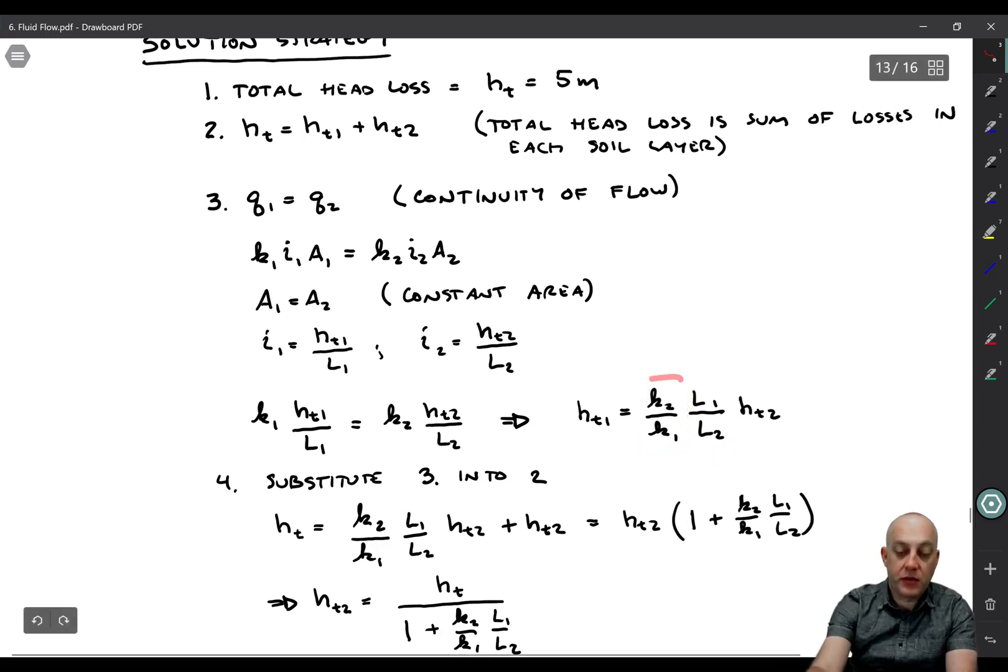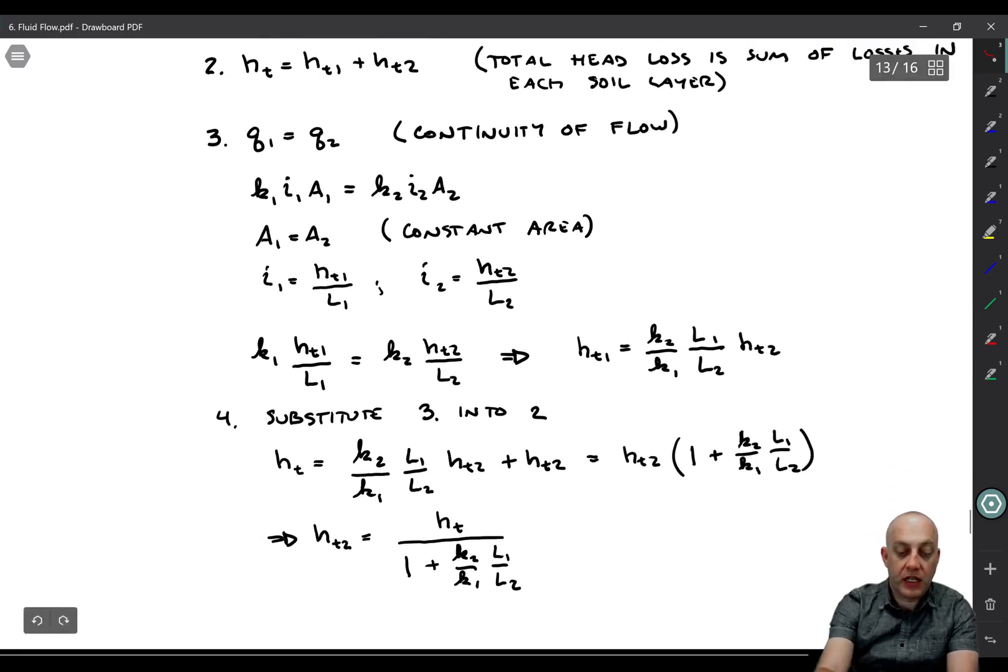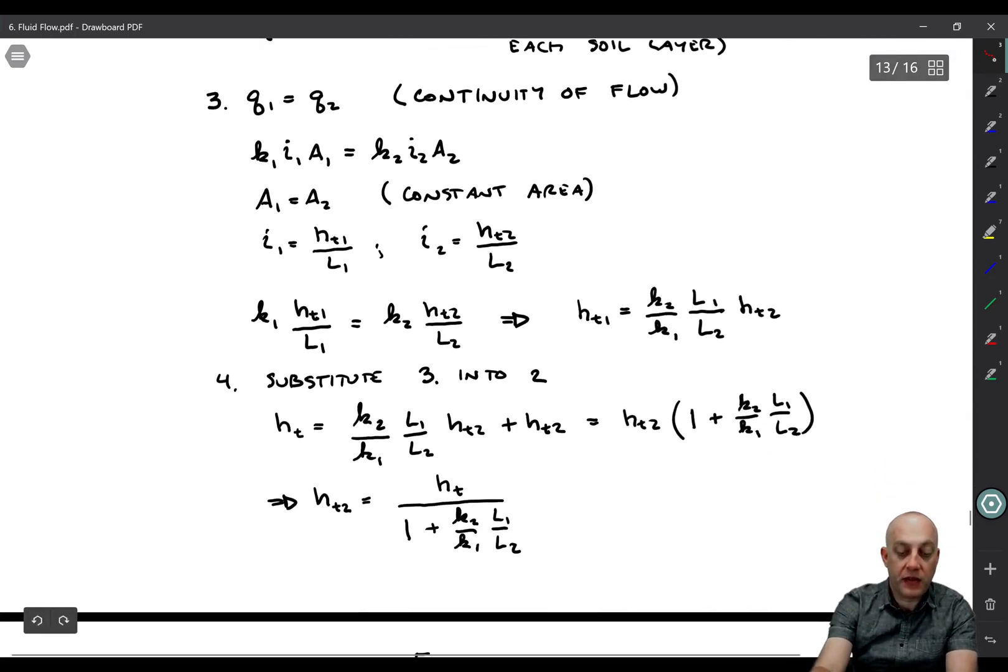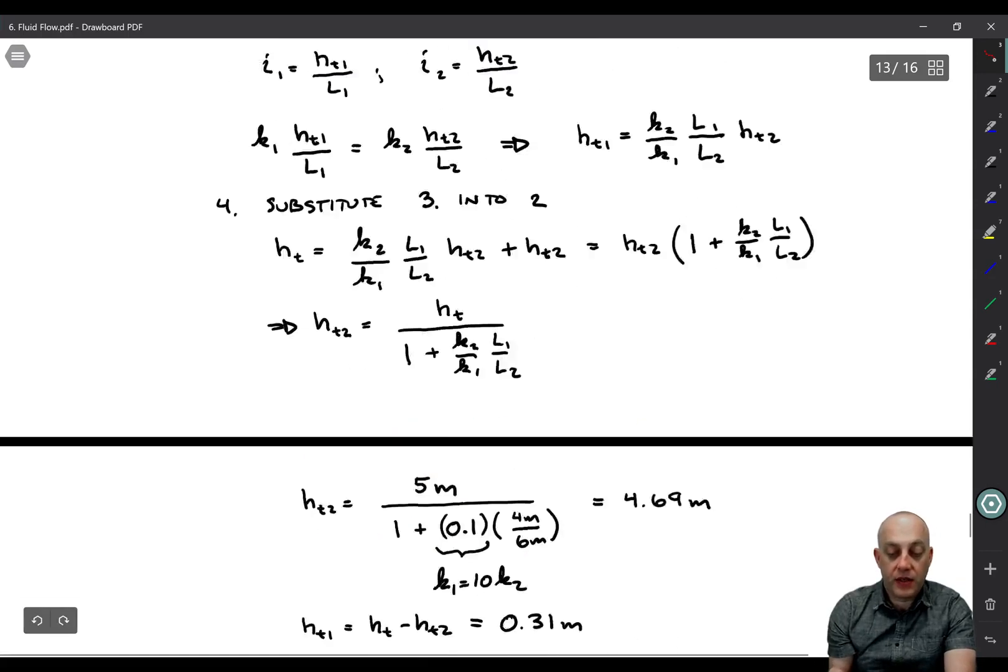So if we substitute this equation from three into this equation here from two, then we have everything that we need to solve for HL2. We would get HT is equal to this equation plus HL2. And we can simplify it by grouping. We get HL2 times one plus K2 over K1, L1 over L2. And we've now solved for HL2.